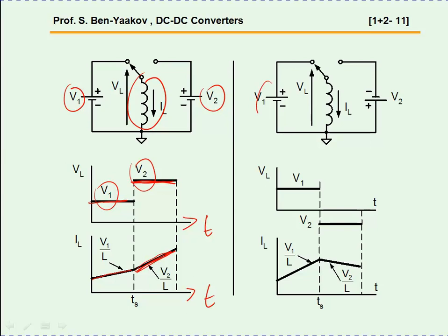Suppose V1 and V2 are of opposite direction — V2 is a negative voltage. We have a positive slope during V1 and a negative slope — minus V over L — during this part.